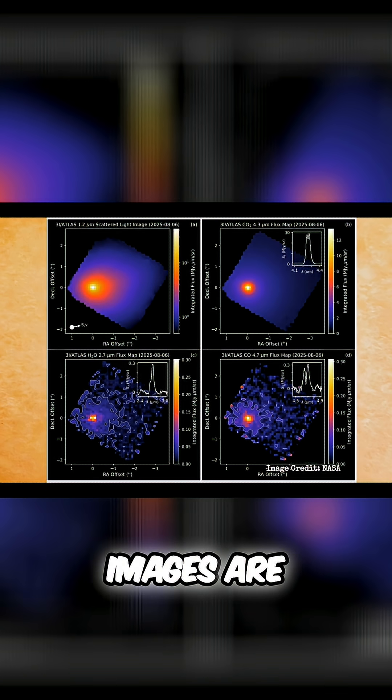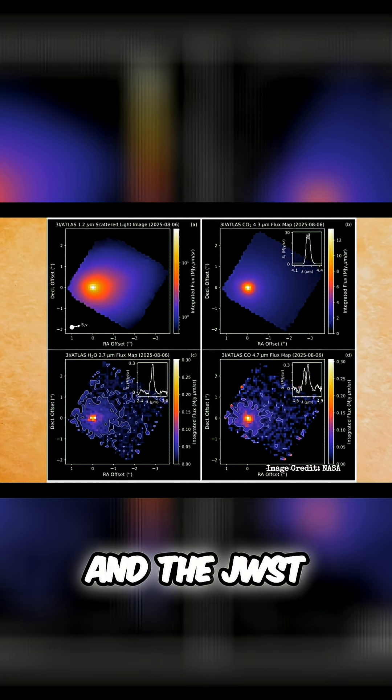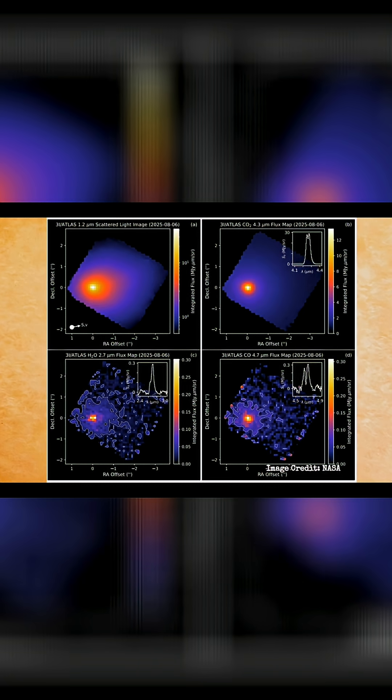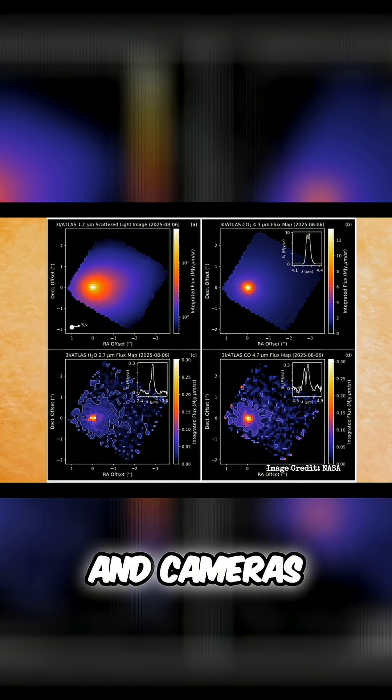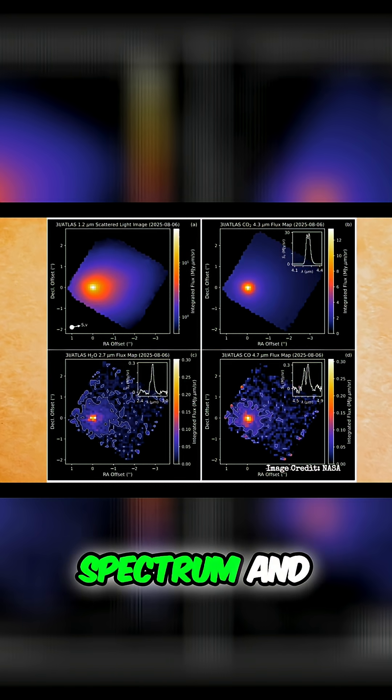But these images are actually from the JWST. And the JWST has these spectral telescopes and cameras on it, so it can look at things like the infrared spectrum and all that.